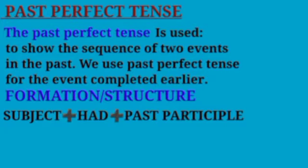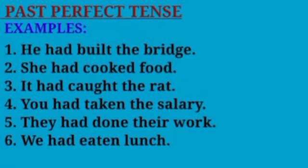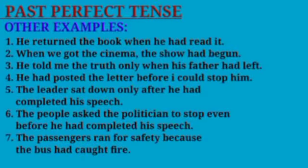The formula or structure: the subject, then 'had' as the auxiliary verb, then the past participle. For example: He had built the bridge. She had cooked the food. It had caught. You had taken the book. They had done their work. We had eaten lunch. Other examples: He returned the book when he had read it.